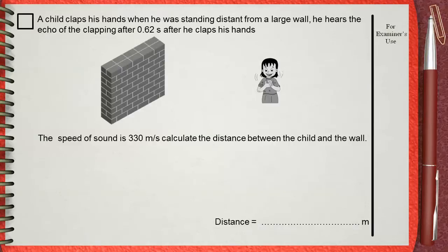A child claps his hands when he was standing distant from a large wall. He hears the echo of the clapping 0.62 seconds after he claps his hands. The speed of sound is 330 meters per second. Calculate the distance between the child and the wall.